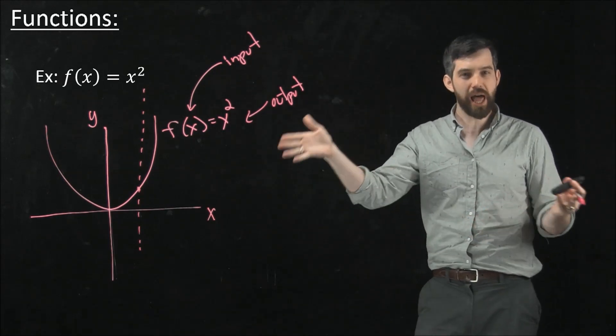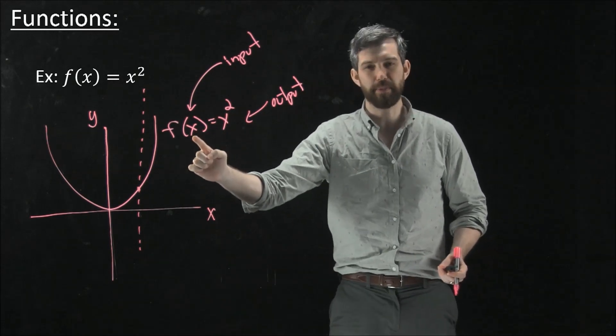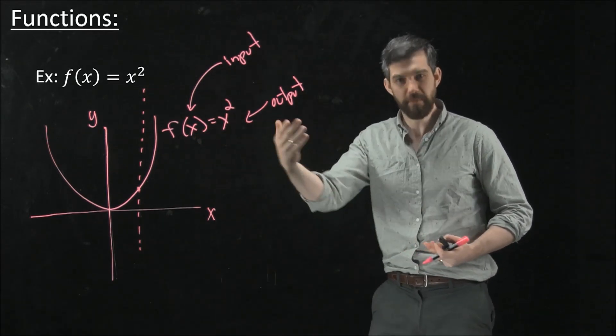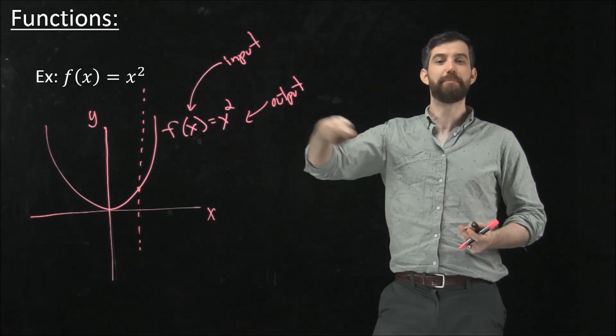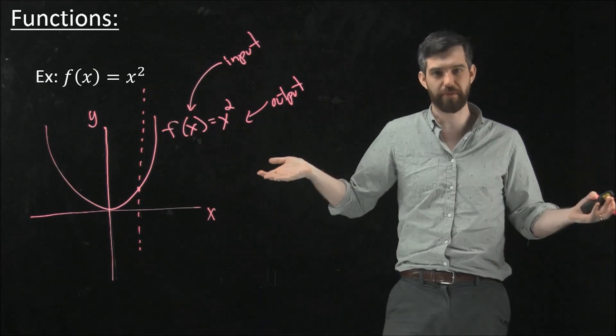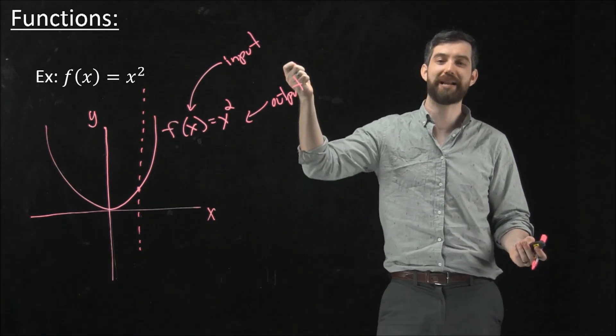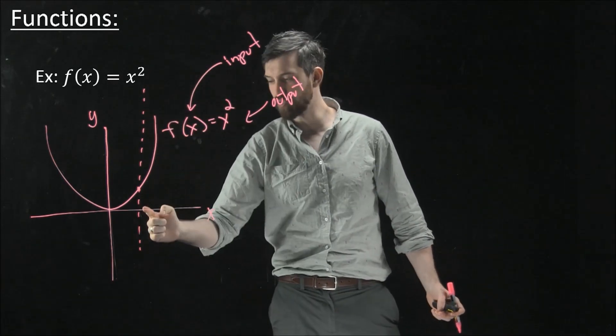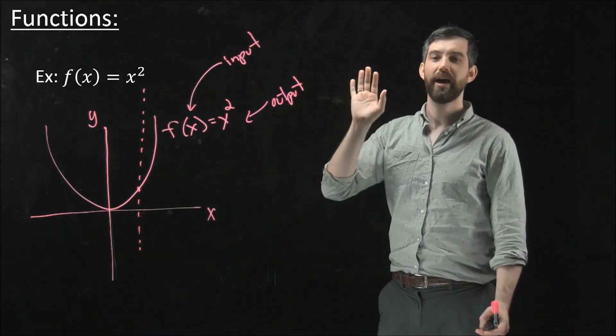The reason why we had a vertical line test is that if I have some input, I want my function to output one particular thing. I want to know that if I give it one thing, it's going to spit out at me one thing. I don't want it to spit out a whole bunch of different possibilities, and I don't know what is happening. I put an input, I expect to get out an output. So that's what the vertical line test tells you. It tells if there's one input, there has to be at most one output for it.